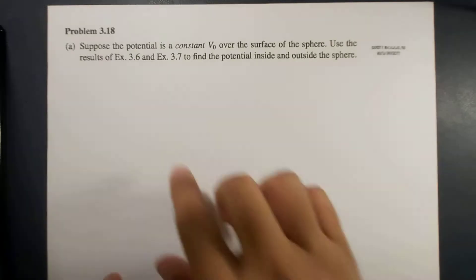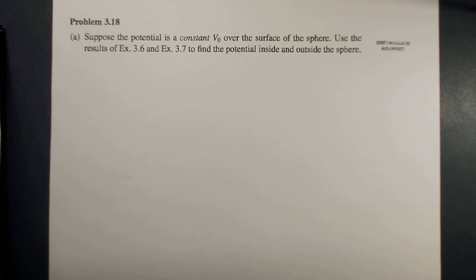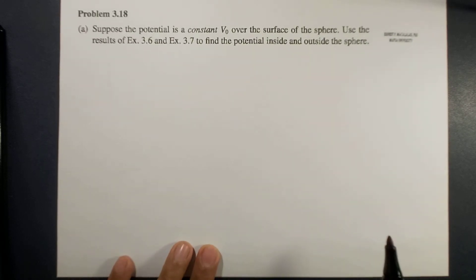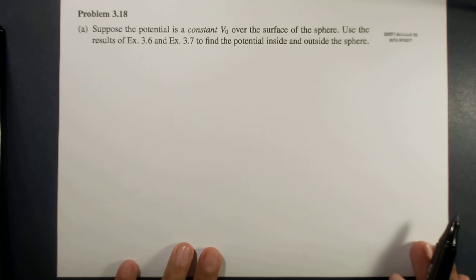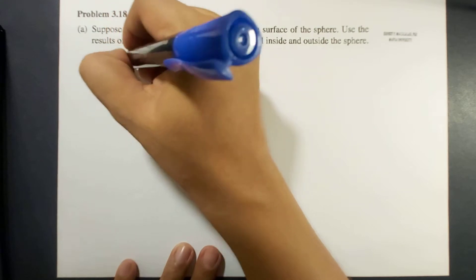This is problem 3.18 from Griffith's fourth edition. For part A, suppose the potential is constant V₀ over a surface of the sphere. Use the results of examples 3.6 and 3.7 from the book to find the potential inside and outside the sphere. I hope you've already understood examples 3.6 and 3.7. Let's start with inside the sphere.